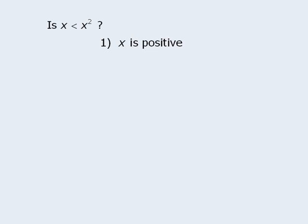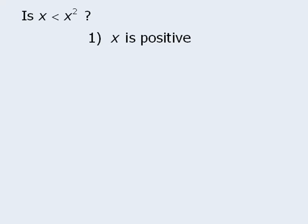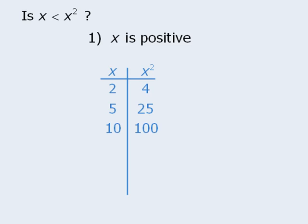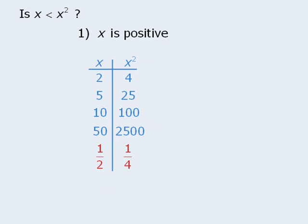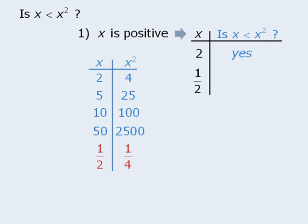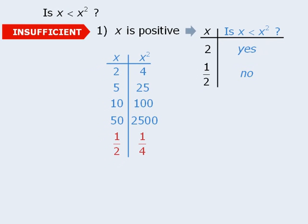Here's a question we looked at in the last lesson that illustrates the utility of negative one-half and one-half. In most cases, when we take a positive number and square it, the squared number is larger than the original — 2 becomes 4, 5 becomes 25, 10 becomes 100. However, numbers between 0 and 1, such as one-half, become smaller when squared. This concept is tested often on the GMAT, so watch out for it. When x equals 2, the answer to the target question is yes, and when x equals one-half, the answer is no. We can say with certainty that statement 1 is not sufficient.